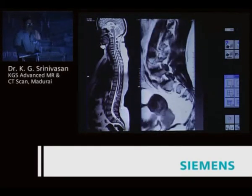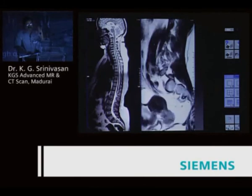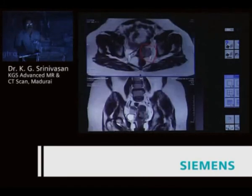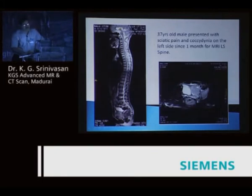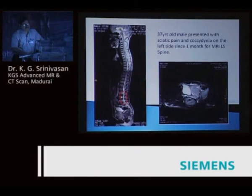This is very important — the history was simply left-side sciatica, nothing more. Careful evaluation of the pre-sacral region revealed carcinoma cervix with parametrial infiltrations. Similarly, a 37-year-old male with left-side sciatica: the spine looked otherwise normal — every patient commonly has L4-L5 disc disease — but you can see a large rectal malignancy in the pre-sacral space.